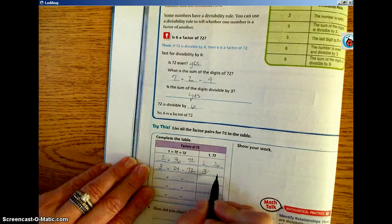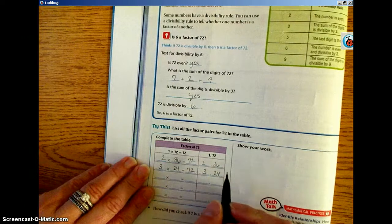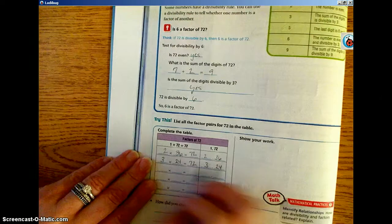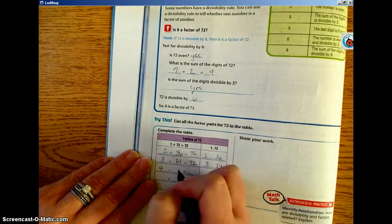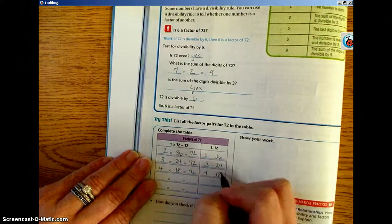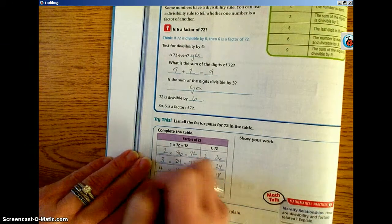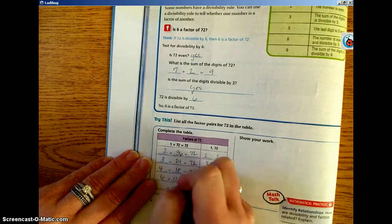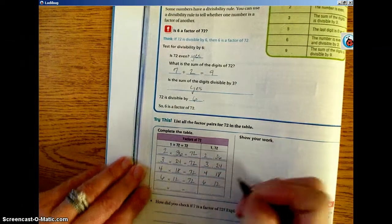We have 4 and 18 equals 72. So our factor pair is 4 and 18. 6 and 12 equals 72. So our factor pair is 6 and 12.